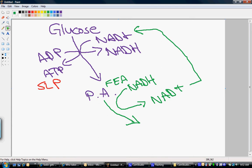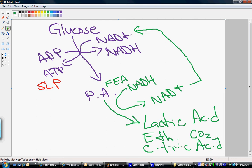When pyruvic acid gets reduced, various things can happen. It can become lactic acid or ethanol and carbon dioxide. I'm just going to preview that. Or citric acid or some sort of organic molecule end product.